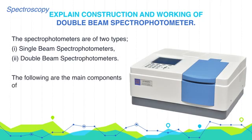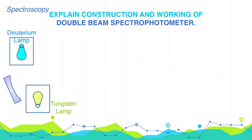The following are the main components of the double beam spectrophotometer. First is the source of radiation. It may be UV light, visible light, or IR radiation.